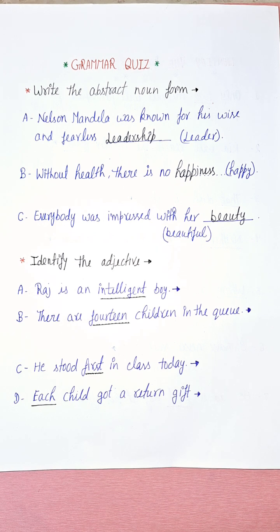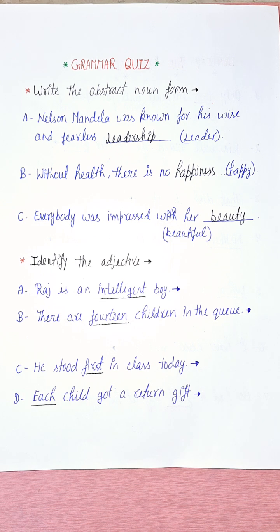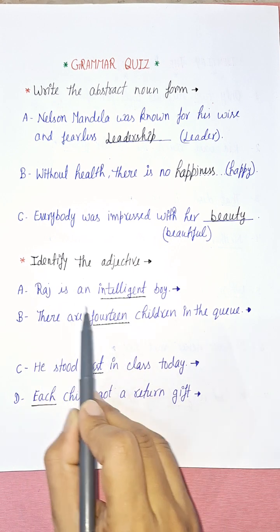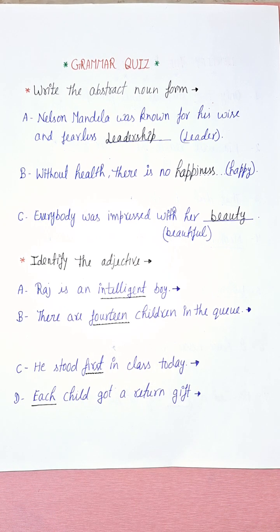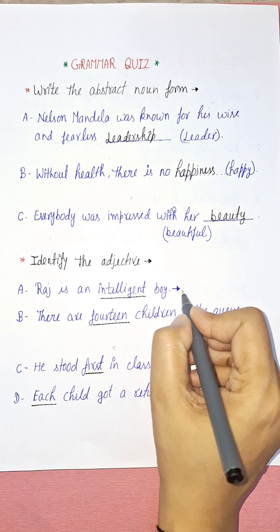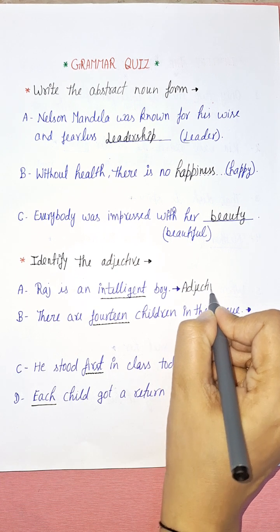Now let's have the first question. Raj is an intelligent boy. We have to identify which adjective is used here. 'Intelligent' is a quality — it shows the quality of Raj. Adjective shows the shape, size, color, quality of a noun, etc. If we write 'Raj is a boy', that is simple. But 'Raj is an intelligent boy' shows the quality of Raj that he is intelligent. So 'intelligent' is your adjective of quality.